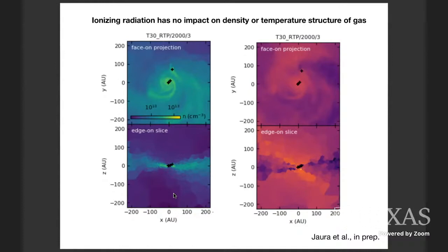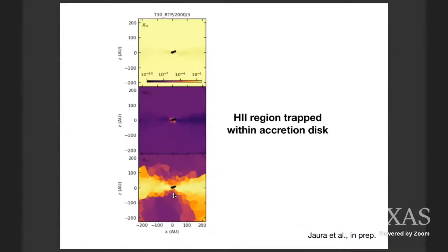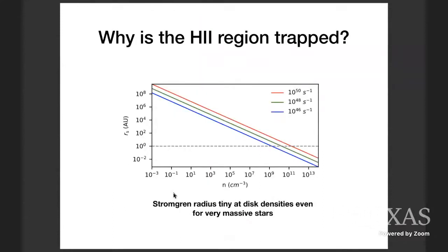So what's going on? If we look at the actual chemical composition, we see that the gas has remained mostly neutral within the disk. It's highly molecular and the ionized gas is all trapped in the center of the disk. It's not broken out of the disk into the polar regions. It's just sitting down in the center and it's unable to escape. So why does the H2 region get trapped down in the center of the disk?